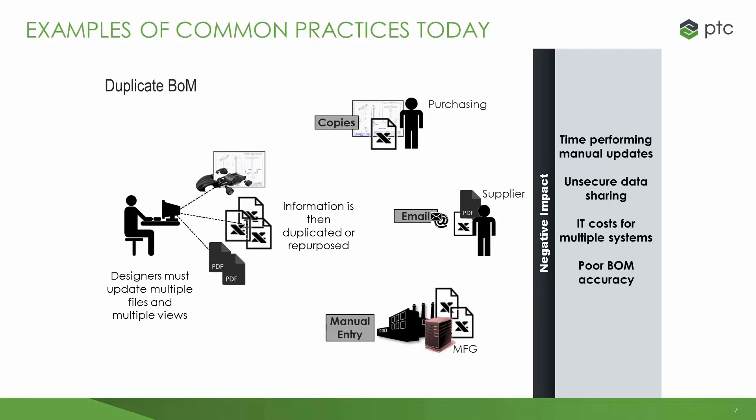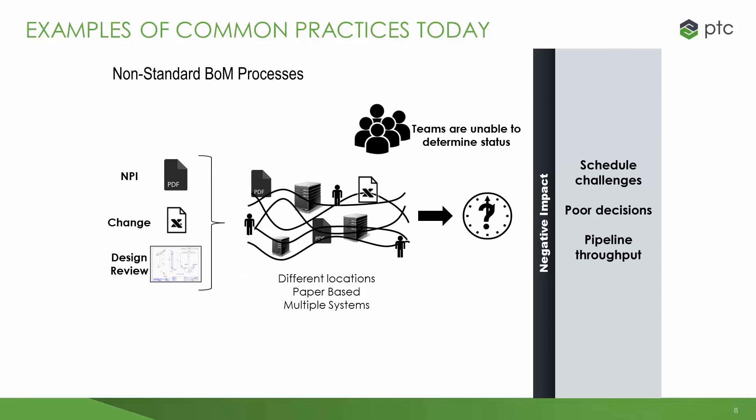Another common practice is to copy and reformat the BOM that is created in engineering into a form and format that's more useful for downstream functions. Often, the different formats are sent from person to person via email, resulting in several copies being in circulation. The problems arise when changes need to be made — all of those existing BOM documents have to be chased down and updated manually. This is time-consuming and error-prone, and often results in some people working on out-of-date and, therefore, incorrect information. In many cases, there simply isn't a standard process for creating, updating, and sharing bills of material information within engineering and within the downstream functions.